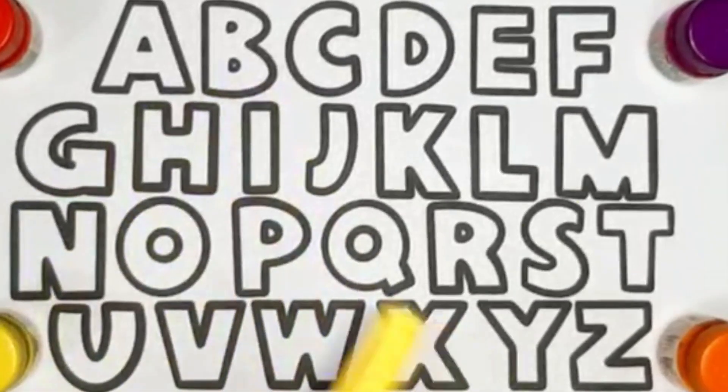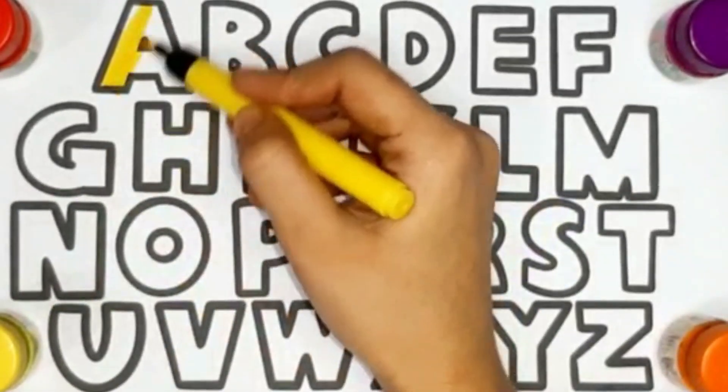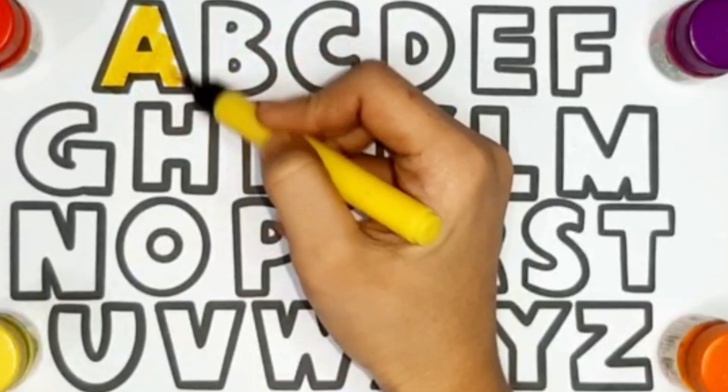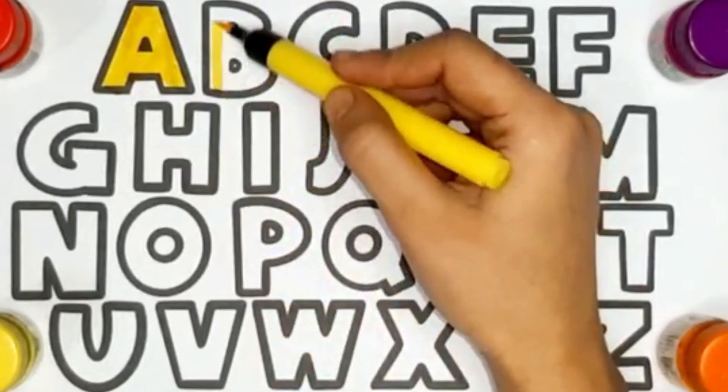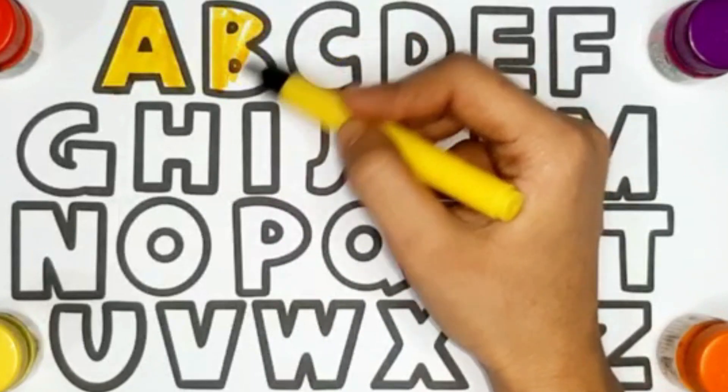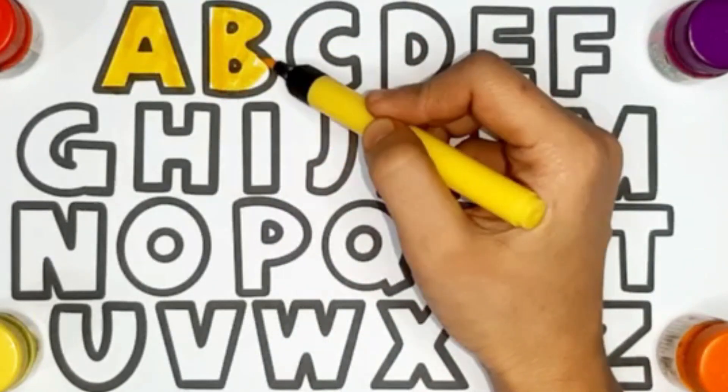Yellow color, A, A for apple, B, B for bat.